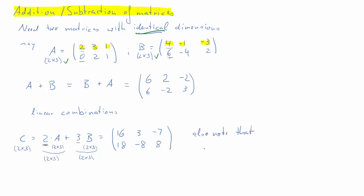You should also note that if you want to calculate C transpose, that turns out to be the same as 2 times A transpose plus 3 times B transpose. So in an addition, the transpose of the result is the same as the sum of the two individual transposes.